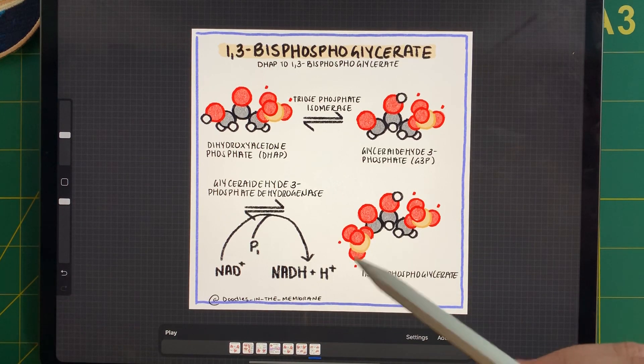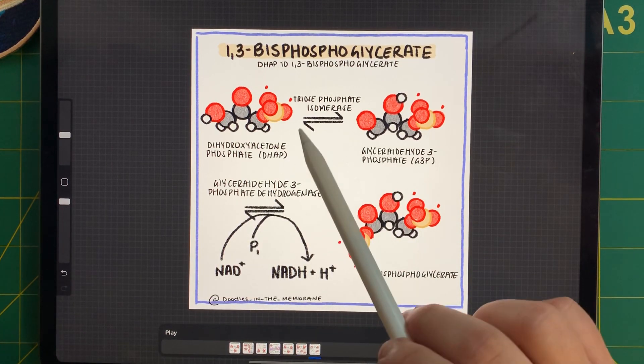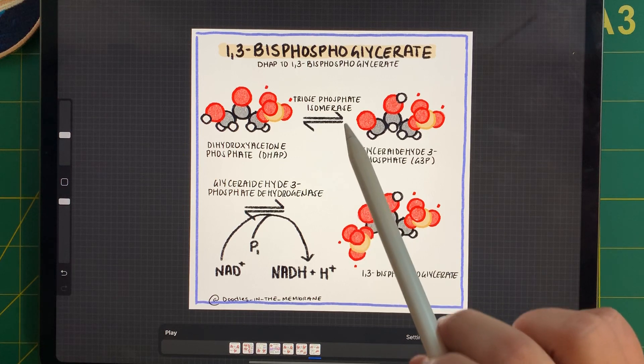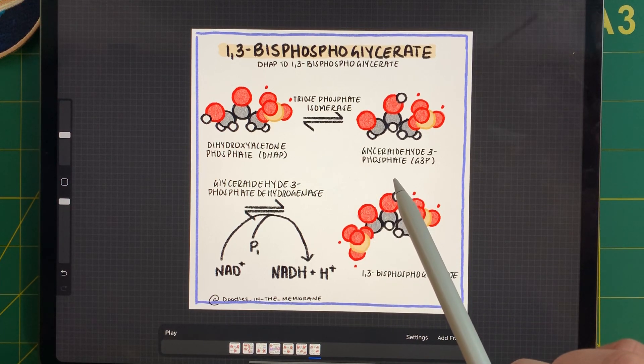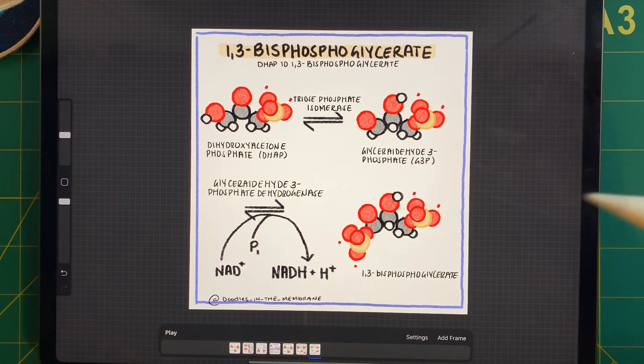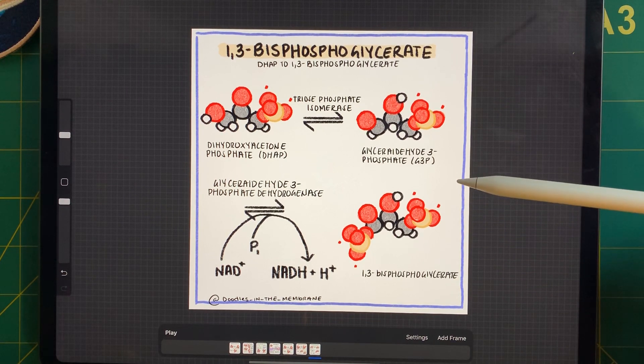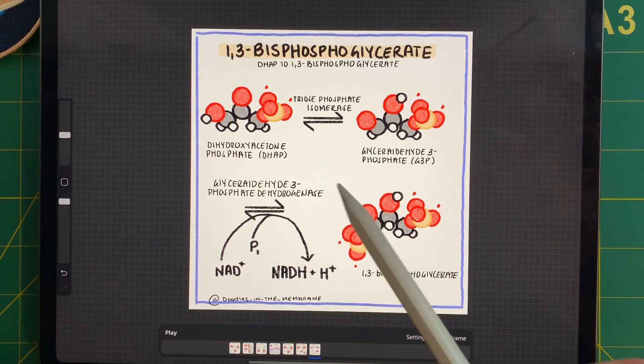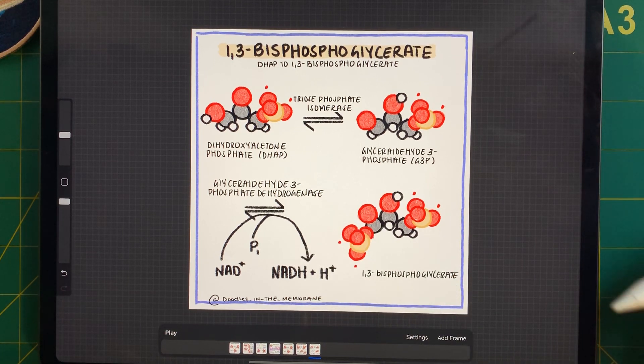The DHAP in which we formed is going to work with a triose phosphate isomerase to turn into glyceraldehyde 3-phosphate. And so at this point in glycolysis, we have two G3Ps. So for all the reactions we look at from here on out, everything is going to be doubled since we have two G3Ps.